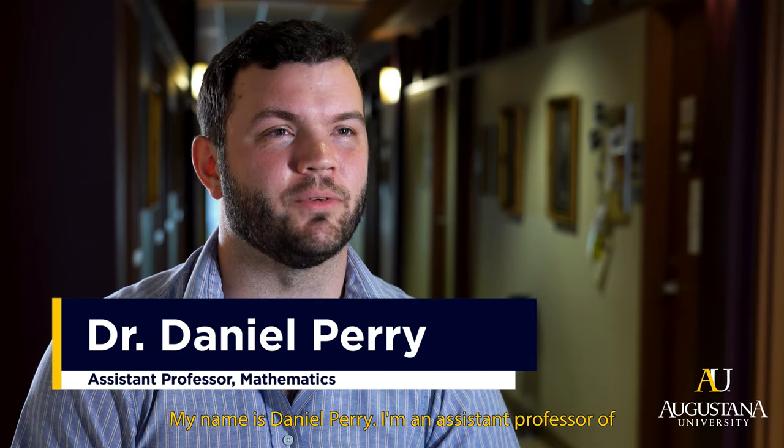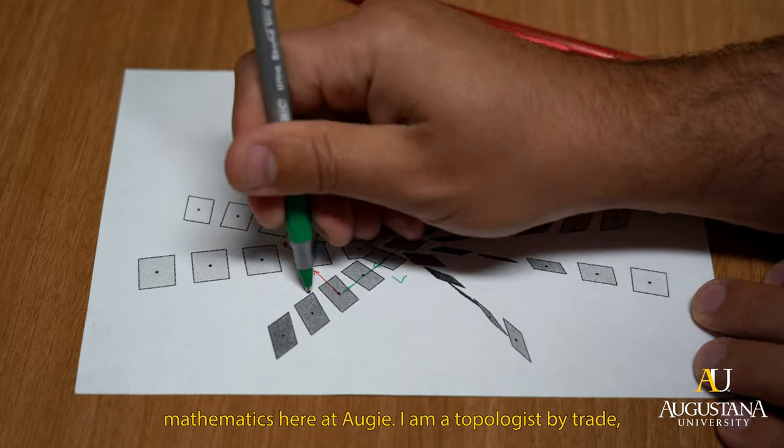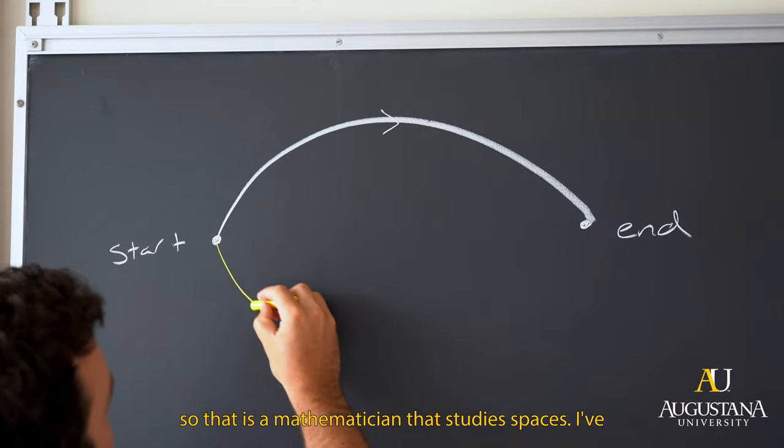My name is Daniel Perry. I'm an assistant professor of mathematics here at Augie. I am a topologist by trade, so that is a mathematician that studies spaces.